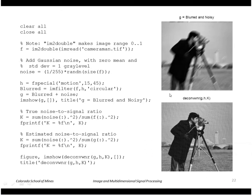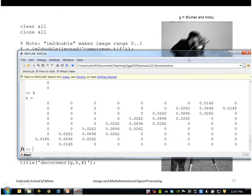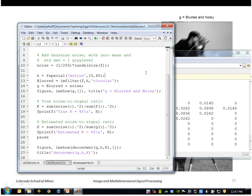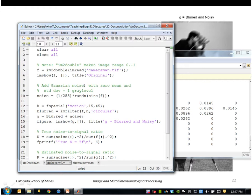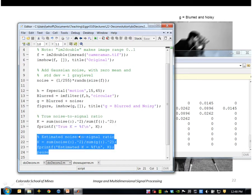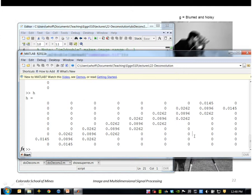I'll do another example on the cameraman using this degradation function. This is the code here so I'll read in the cameraman, add noise to it. No, first I blur it, then I add the noise, compute the true signal to noise ratio.